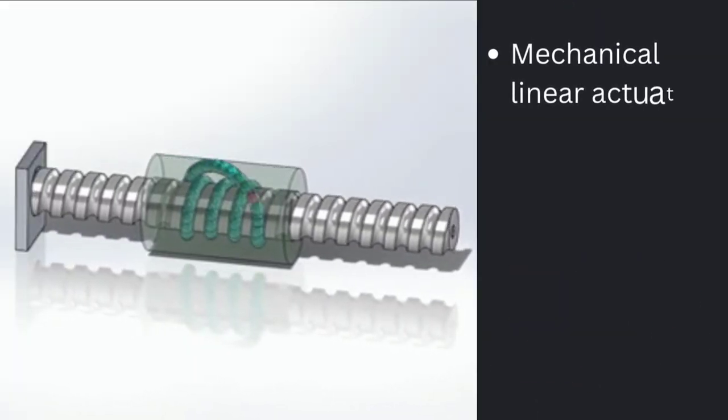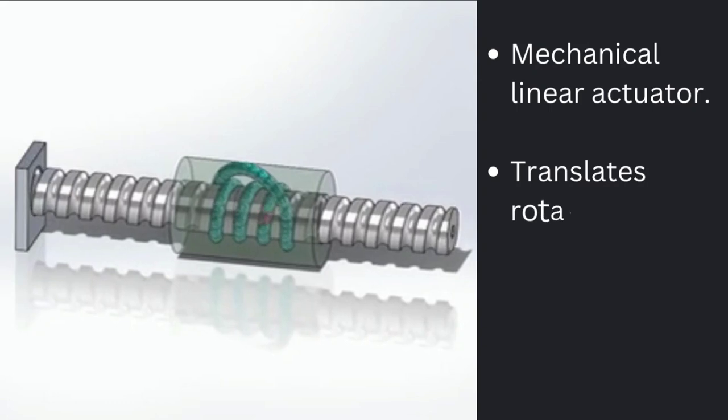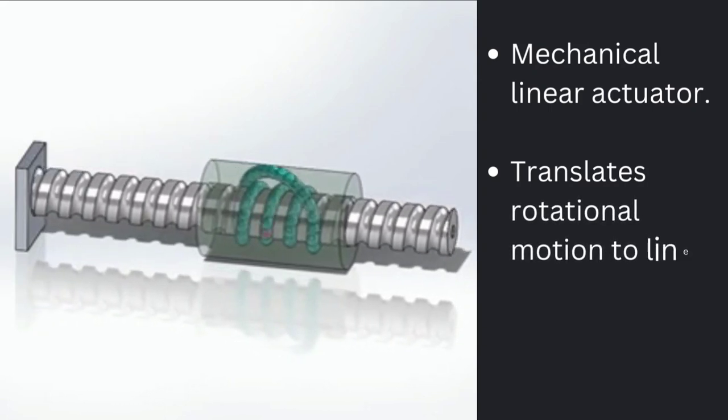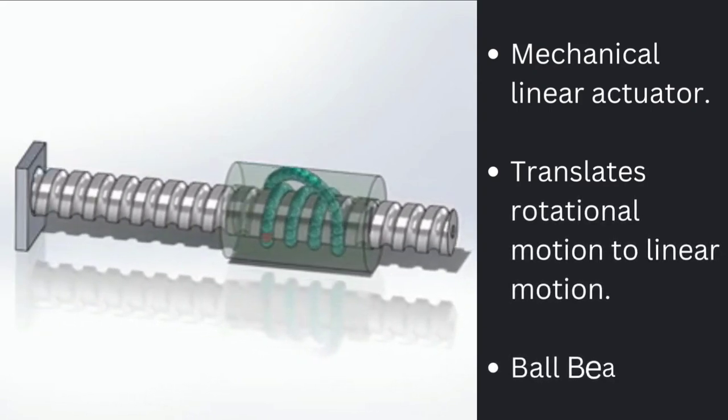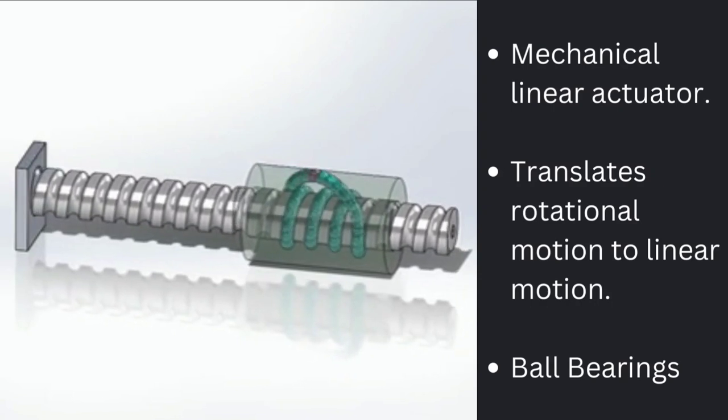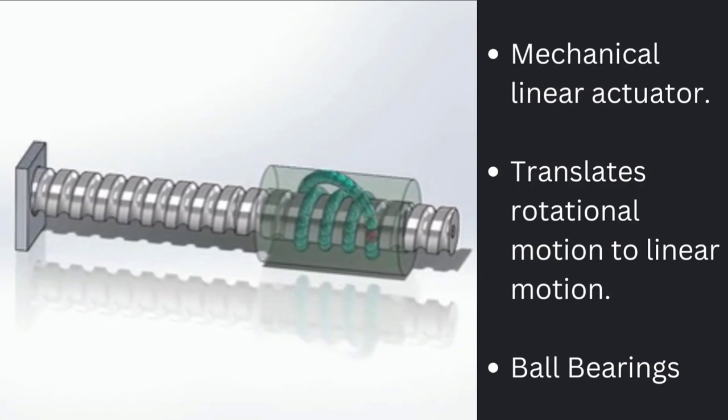A ball screw is a mechanical linear actuator. It translates rotational motion to linear motion with little friction. A threaded shaft provides a helical raceway for ball bearings which acts as a precision screw.